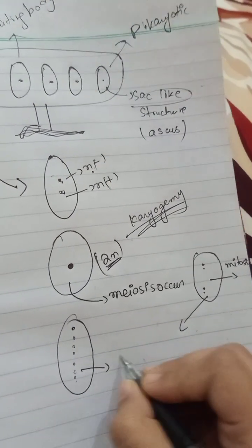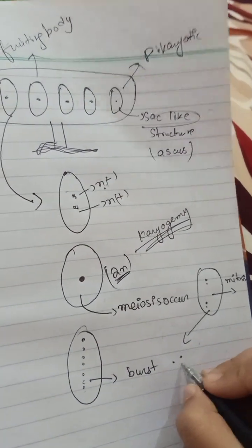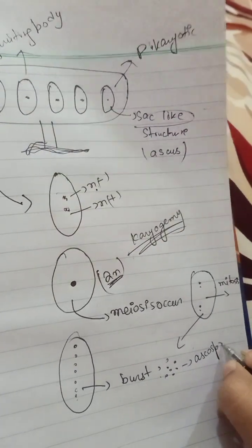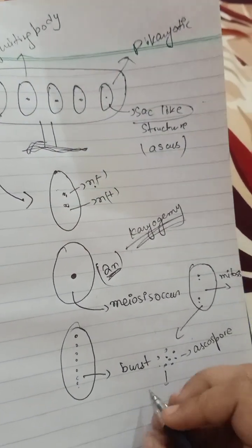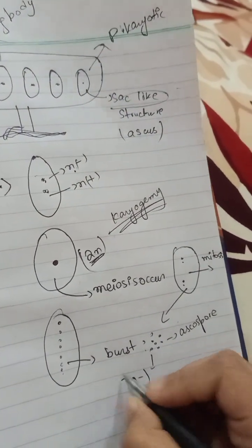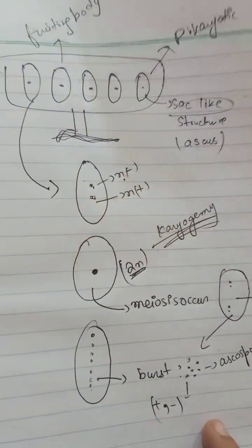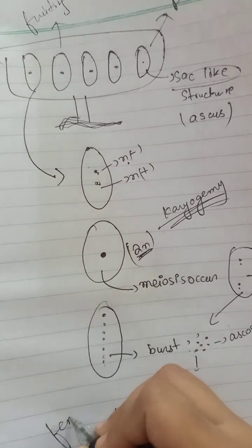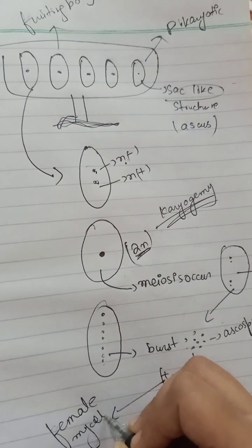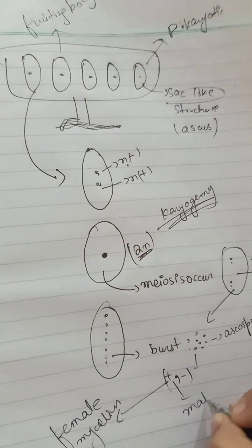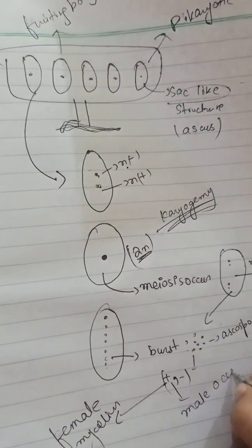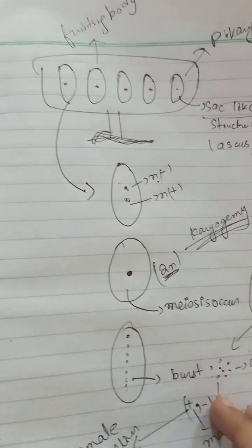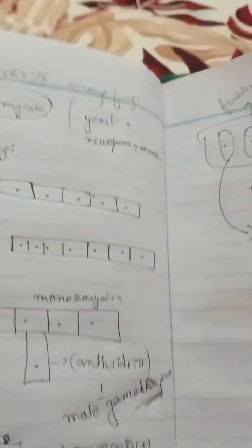When the ascus bursts, the spores are released — these are called ascospores. The ascospores carry both positive and negative types. From the negative type, female mycelium will develop, and from the positive type, male mycelium will develop. This completes the reproduction cycle of Ascomycota.